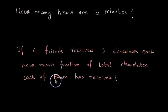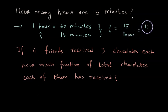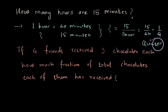How many hours are 15 minutes? We know 1 hour equals 60 minutes. Since 15 minutes is less than 60 minutes, the answer will be less than 1 hour — so it must be a fraction. We find 15 minutes as a fraction of an hour: 15 divided by 60 minutes, which equals 1/4. So 15 minutes is a quarter of an hour.